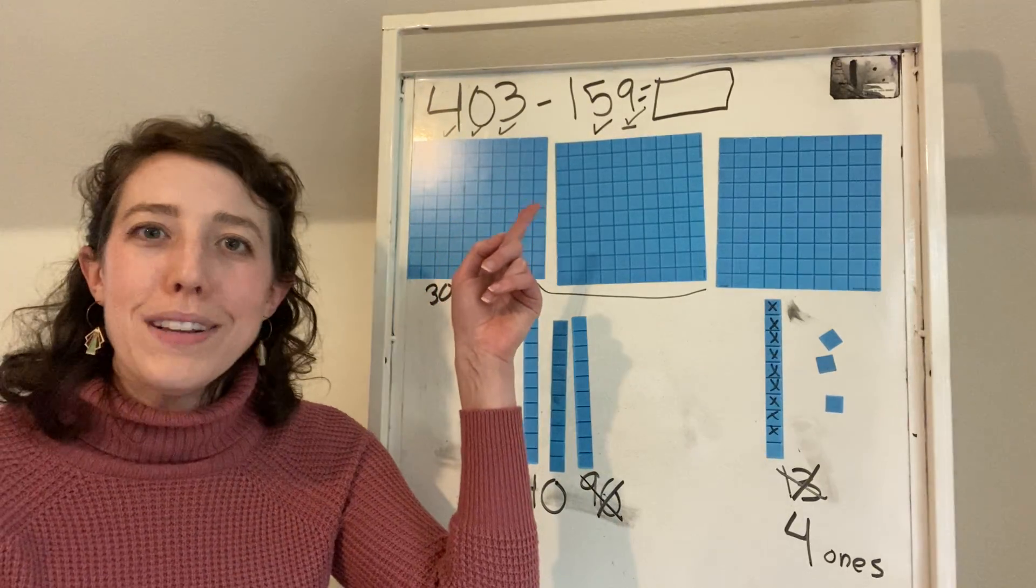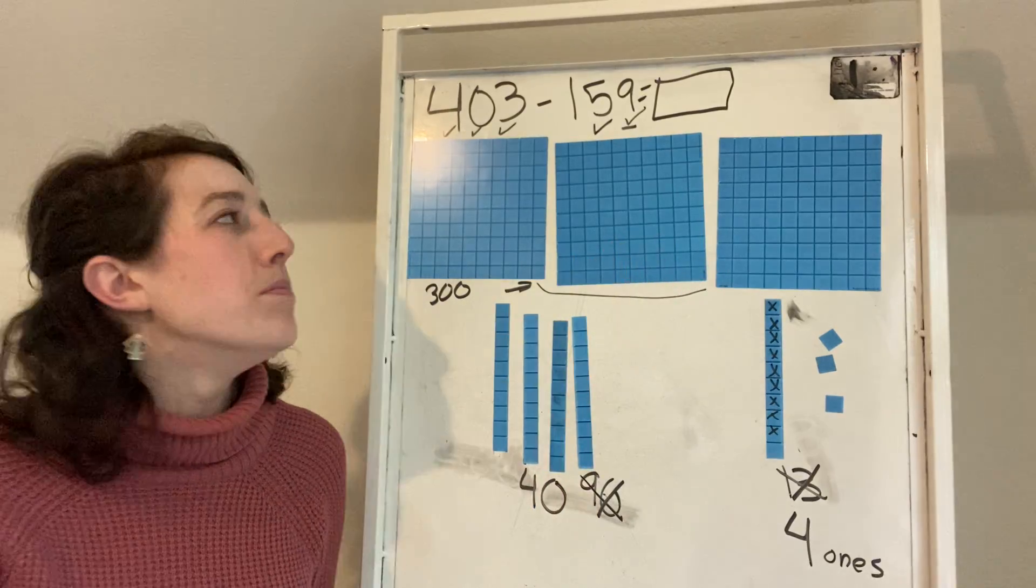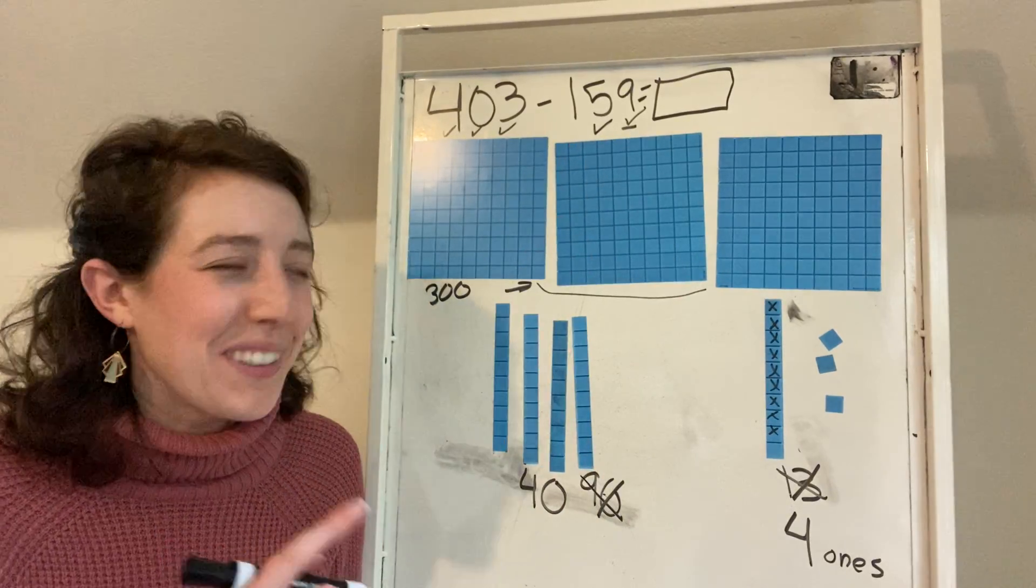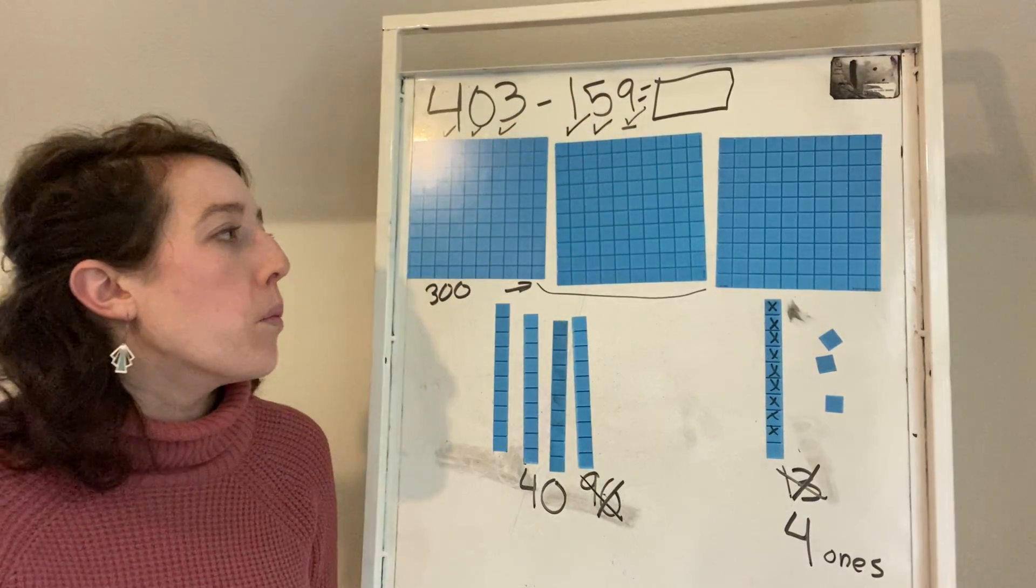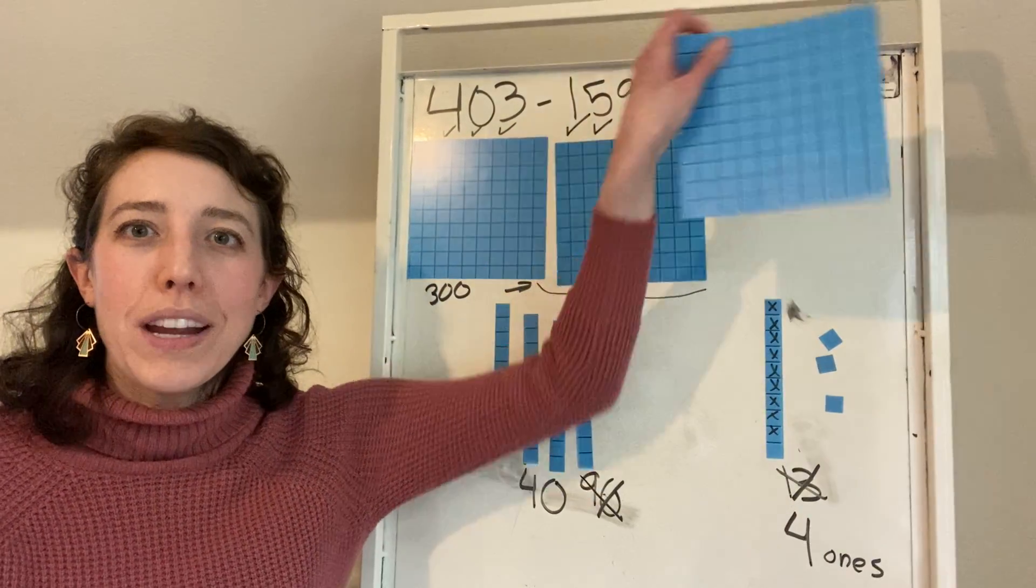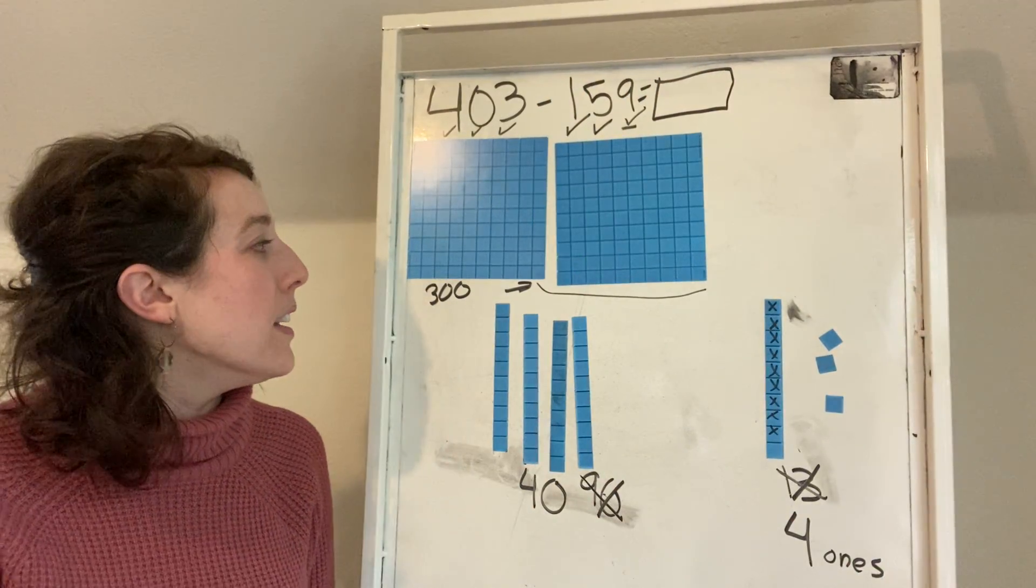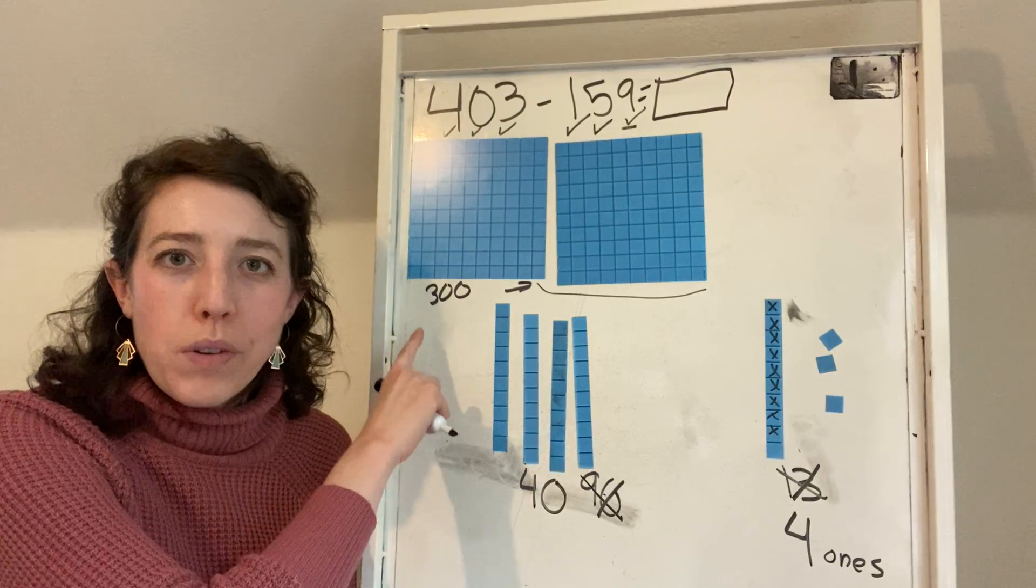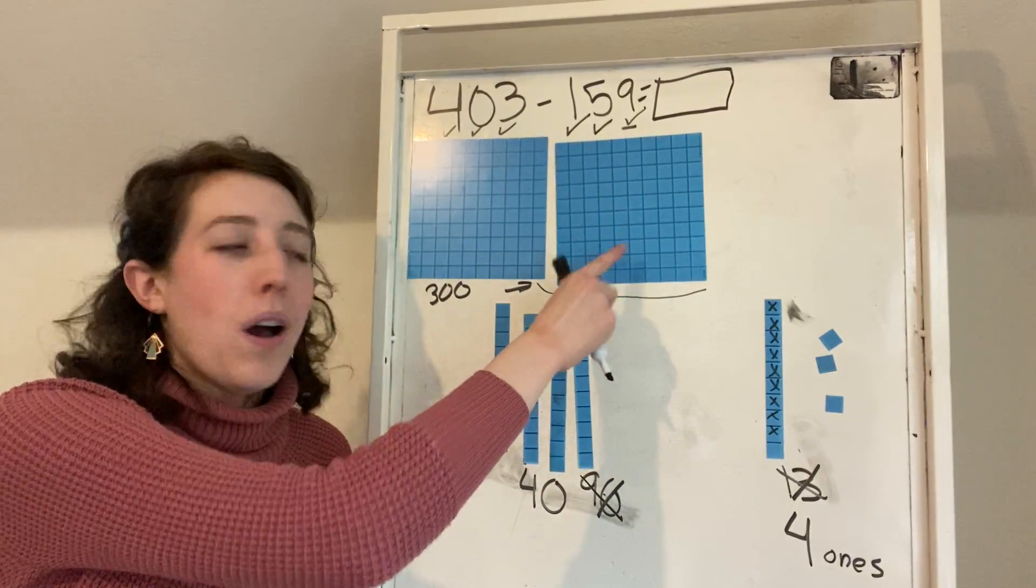Do you guys see what's the last thing I have to do? I need to subtract my one hundred. So I'm going to put a check mark beneath my one. And I'm going to take my 100 and subtract it, which means I don't have 300. I have 100, 200.